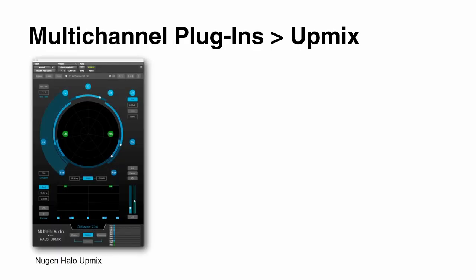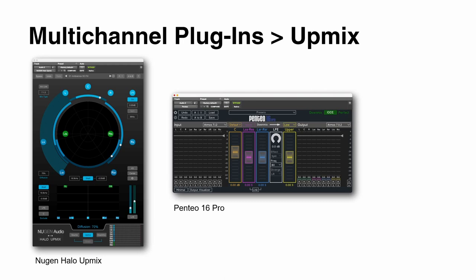Last but not least, a very important topic is upmix plugins. Sometimes it's handy to upmix a stereo or 5.0 source and make it available in an immersive audio format. There are a couple of upmix plugins available — I already mentioned the AuroMatic 3D upmix plugin. The Nugen Halo Upmix and Penteo 16 are more or less standard plugins used for upmixing from stereo or 5.1 to something else. It could follow a Dolby Atmos track layout, an Auro 3D layout, or even go into ambisonics — upmixing a sound into a third-order ambisonics environment, completely free of channel reproduction systems.